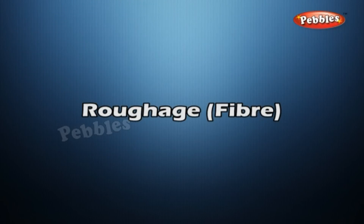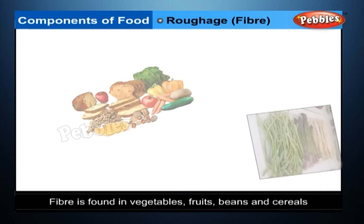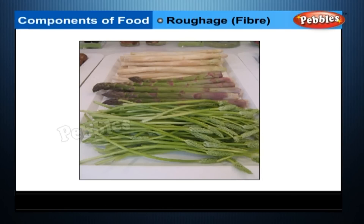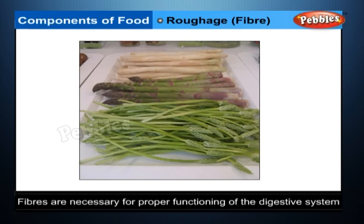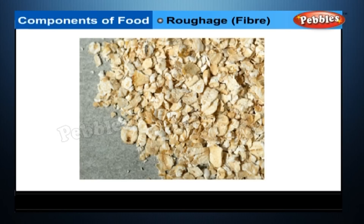Fibre (Roughage): Fibre is found in vegetables, fruits, beans and cereals. It has no nutritive value, but prevents constipation and is necessary for proper functioning of the digestive system. Ideally, our food should contain sufficient fibre.